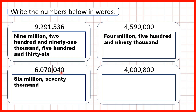Then we look at the last three digits — the digits after the second comma. We have zero, four, zero, so that's 40. Now rather than writing a comma after the word thousand, because we don't have any hundreds, when we write the number in words we can just write 'and 40.' So we still have a comma if the number is written in digits, but when writing numbers in words, if we don't have any hundreds, we can just write 'and' then the number. So our number is six million seventy thousand and forty.